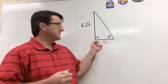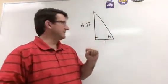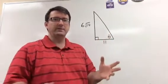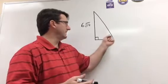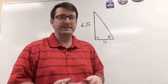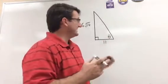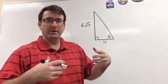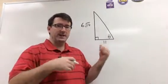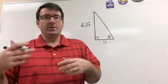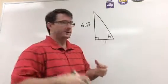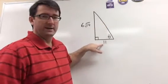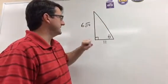Alright, number five. We're given this triangle and we're asked to find the secant of theta. We're not actually asked to find theta, we're just going to find the secant of theta. Secant is the reciprocal of the cosine. Cosine is adjacent over hypotenuse, so secant is hypotenuse over adjacent.